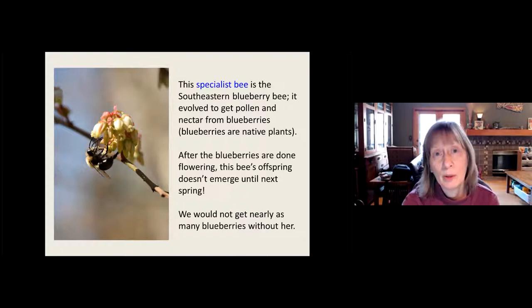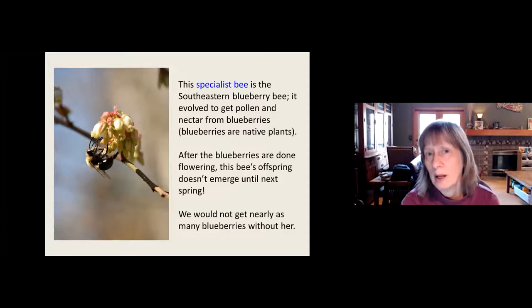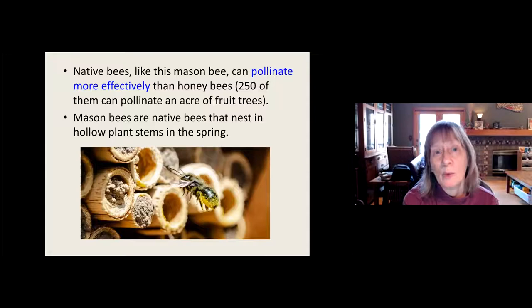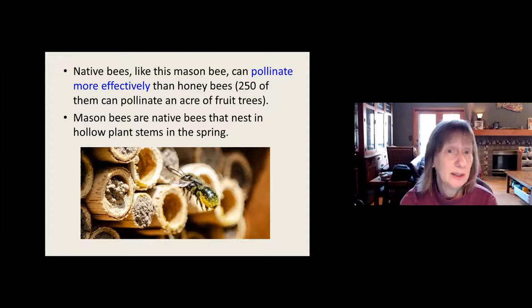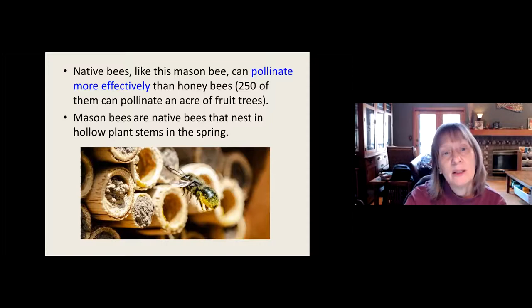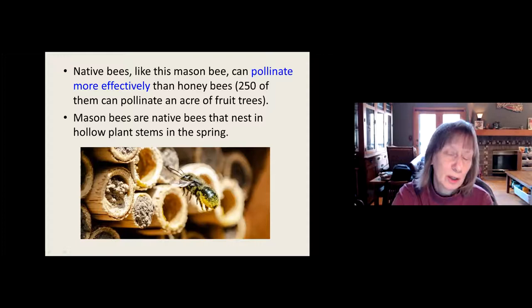We wouldn't get nearly as many blueberries without her, because native bees are highly efficient on native plants. Native bees like the mason bee can pollinate more effectively than honeybees — 250 mason bees can pollinate an entire acre of fruit trees, yet today we ship bees around the country on tractor trailers just to do that. Mason bees are native bees that nest in hollow plant stems in the spring. When you hear people talk about not cleaning up your garden until later in the spring, it's because the bees are living in those hollow stems waiting to come out once it warms up.